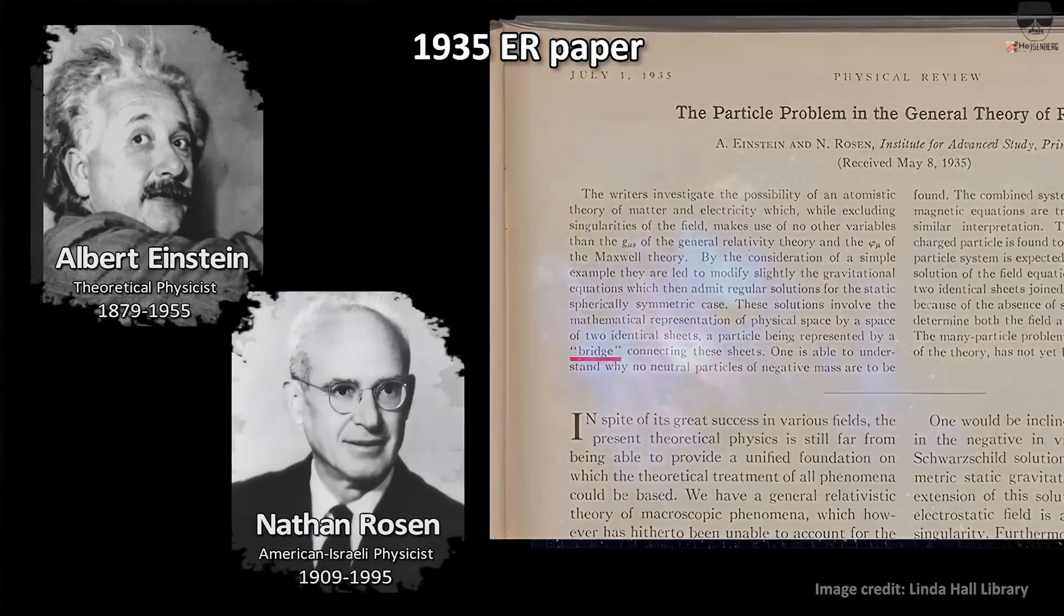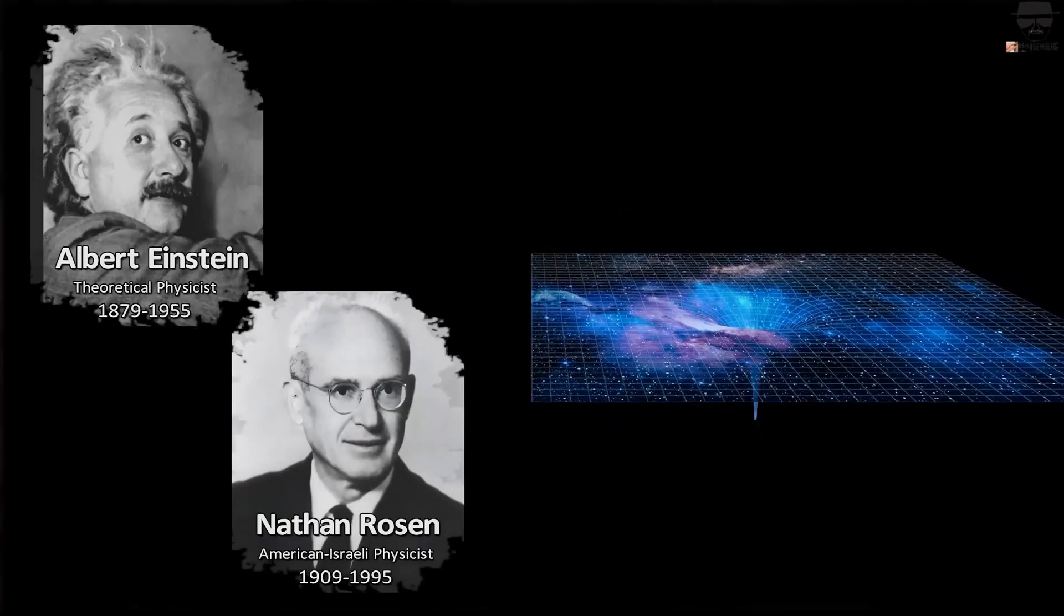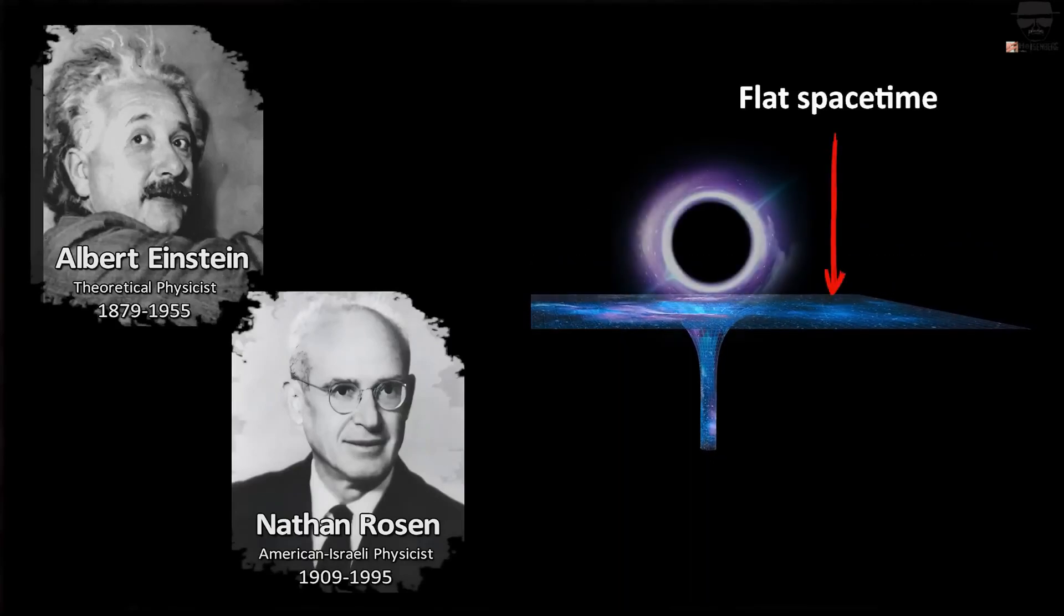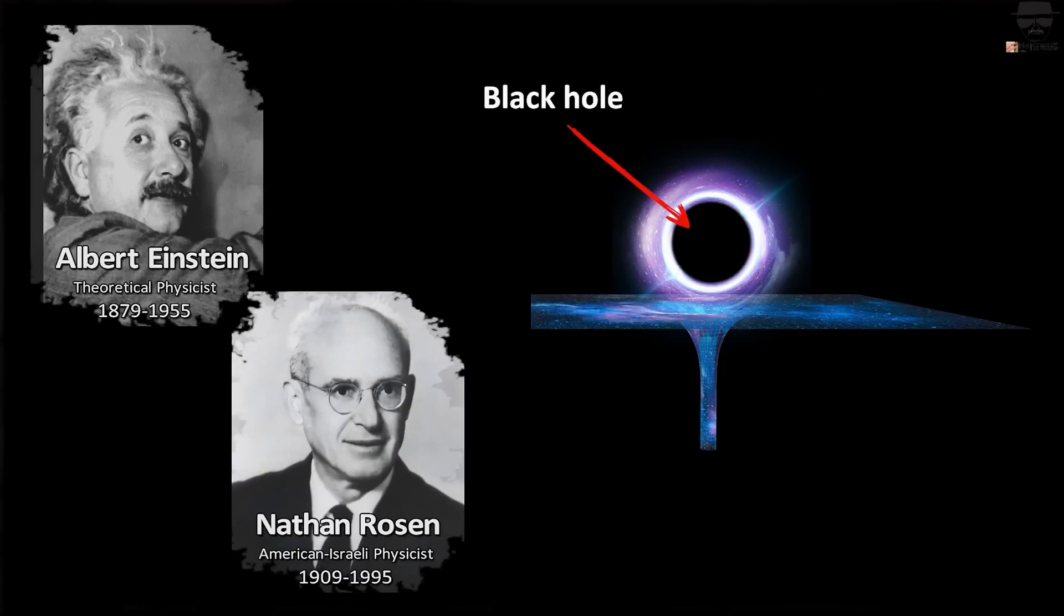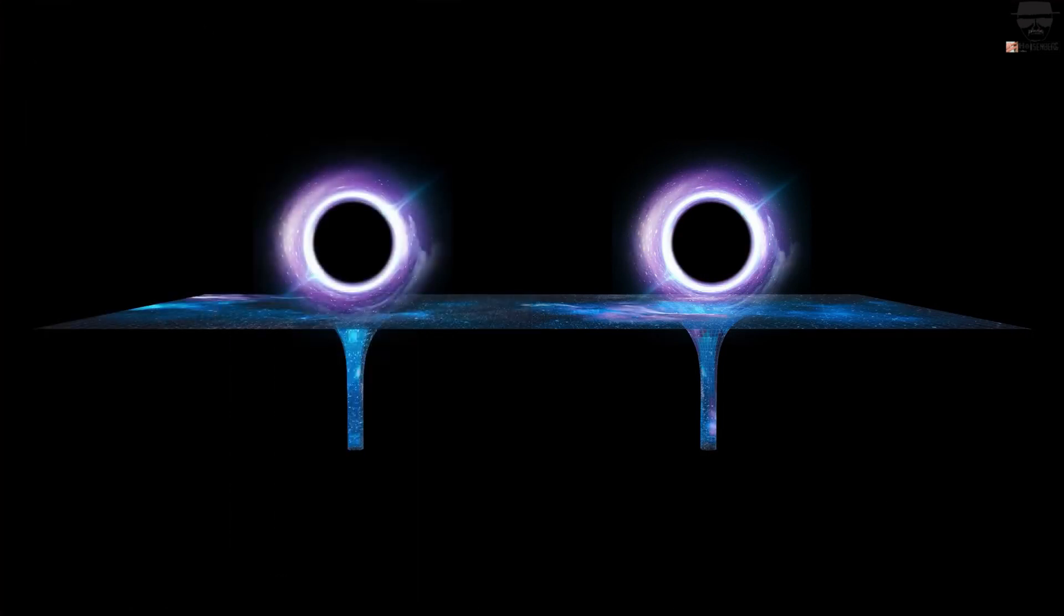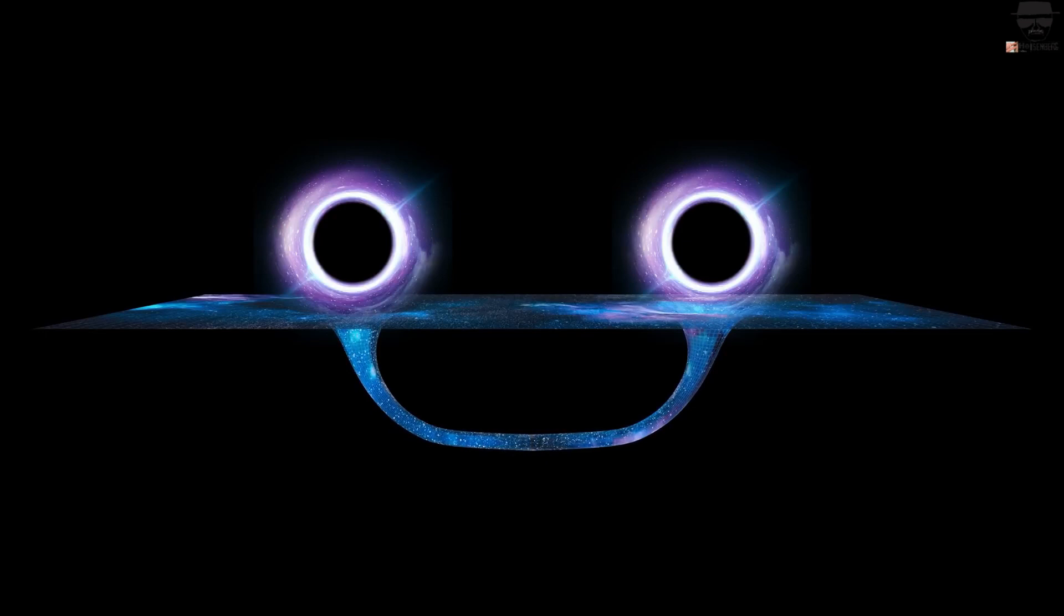One problem was that the theory predicted infinities at the center of black holes. These infinities arose when the total mass of a dead star collapsed down into a spot of zero size, what are called singularities. Rosen and Einstein played around with other possible solutions, including using some creative mathematics to replace two singularities with a tube that connected them. These tubes are called Einstein-Rosen bridges, or, more colloquially, wormholes.